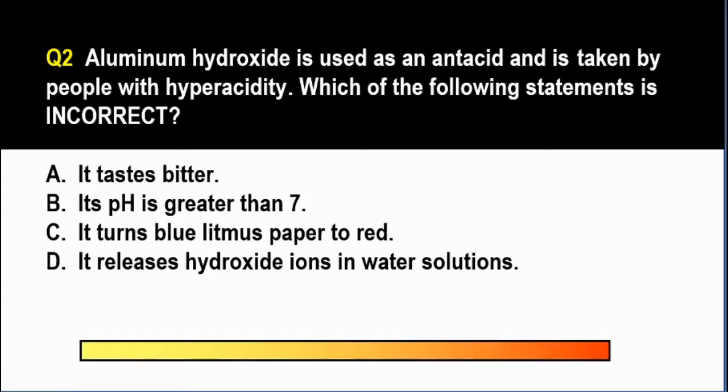Ang tamang sagot ay letter C. Antacids such as Kremil-S, they work by counteracting or neutralizing the acid in your stomach. And antacids are able to neutralize the acids or the gastric juices because they are precisely bases or alkalis. So dito, naghahanap tayo ng statement na incorrect.